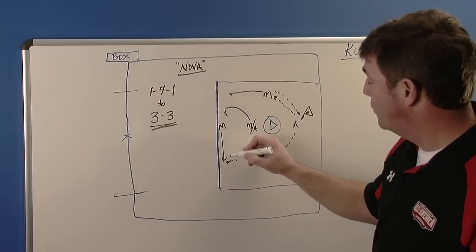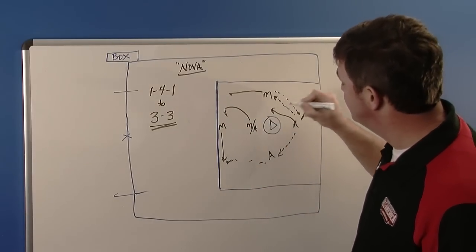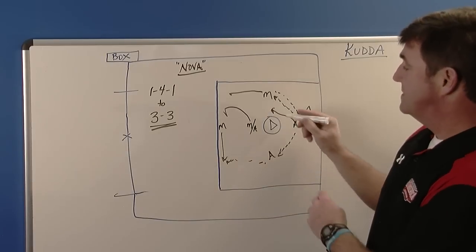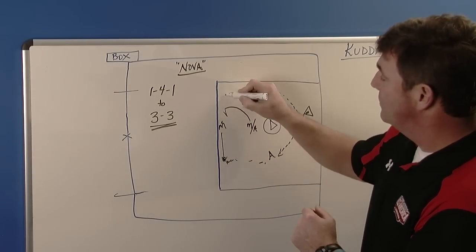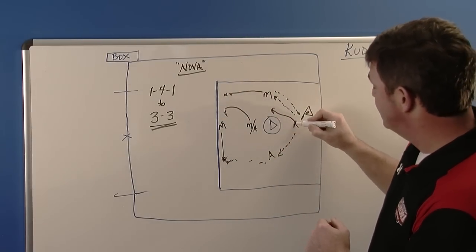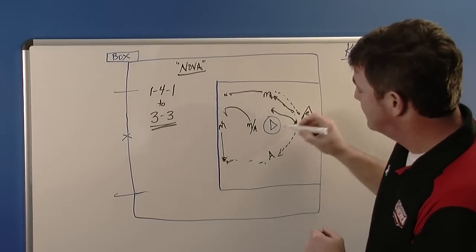This midfielder quickly moves it here and this attackman is coming towards that back pipe. So you can see we have a midfielder, a midfielder, and a midfielder and now this attackman is up on this goal line extended.